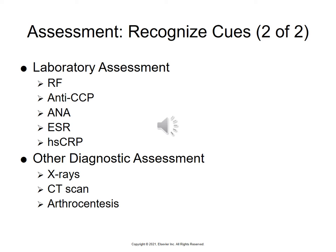Other diagnostic assessments include joint changes on x-ray and CT scan to examine the cervical spine. Arthrocentesis is a needle aspiration of the joint; in rheumatoid arthritis the synovial fluid will show white blood cells, cloudiness, and increased volume. Post-procedure care includes ice for 24 hours. We also monitor the CBC for low hemoglobin, hematocrit, and red blood cells, as anemia is very common in people with rheumatoid arthritis.